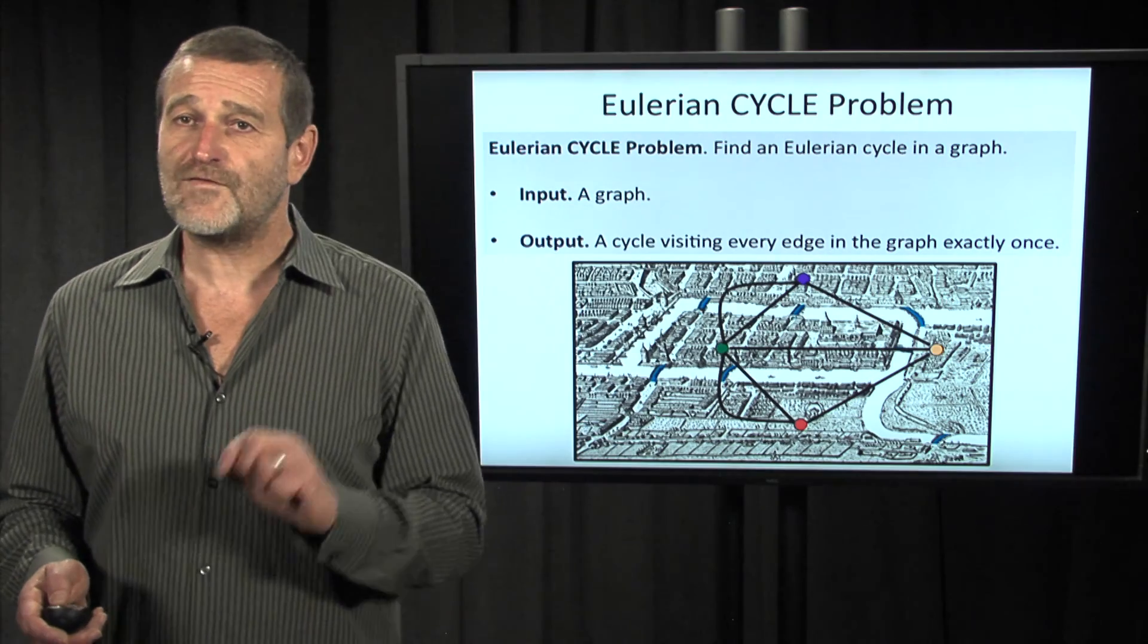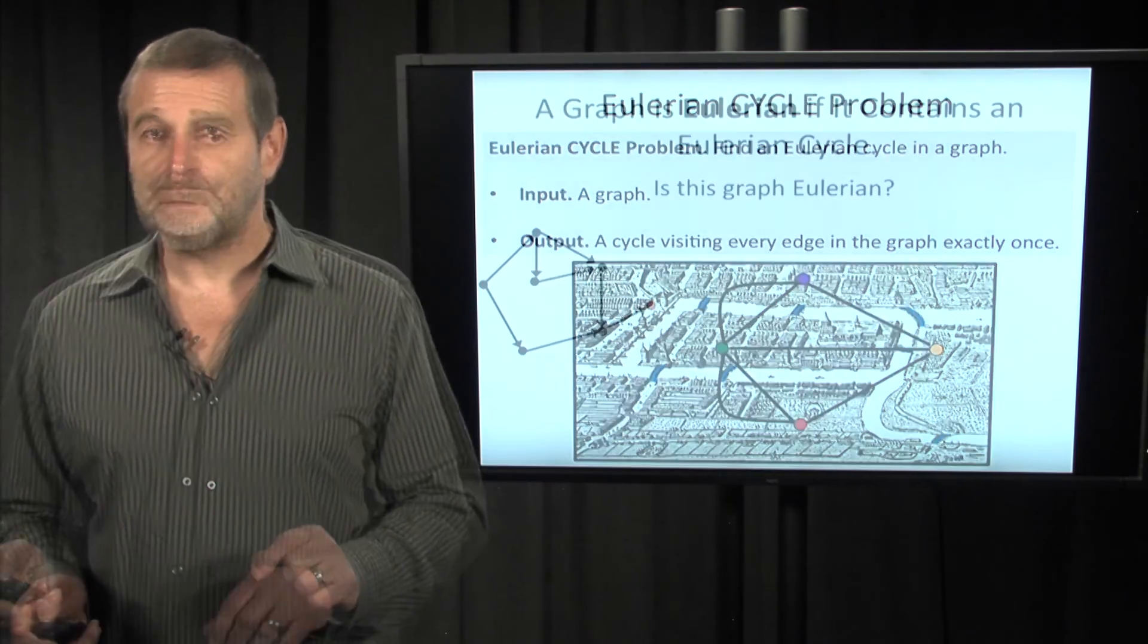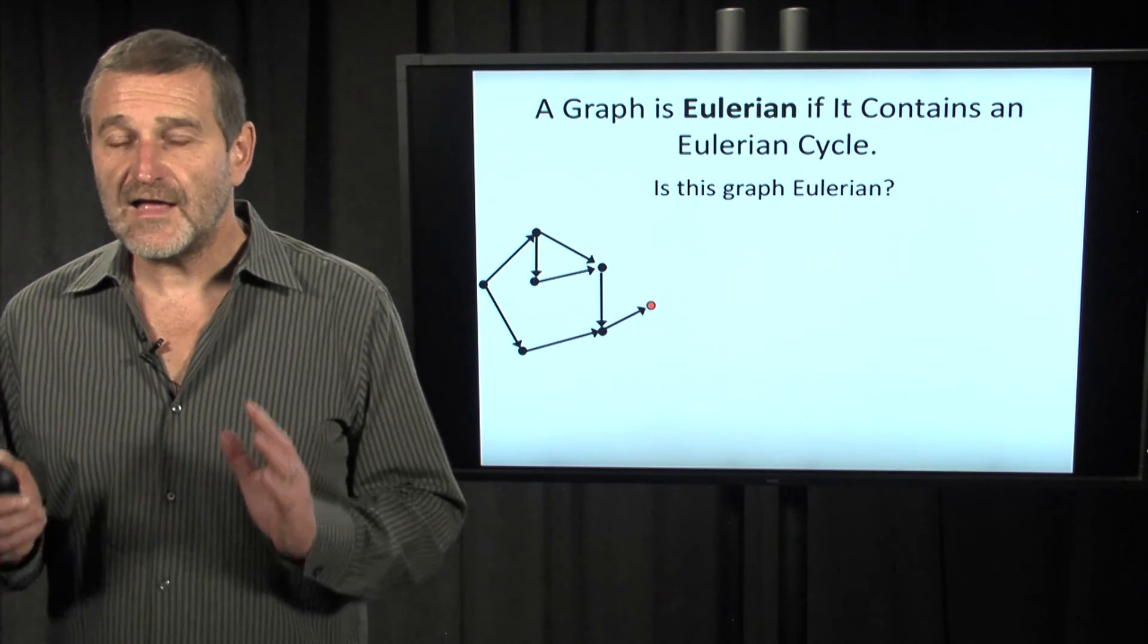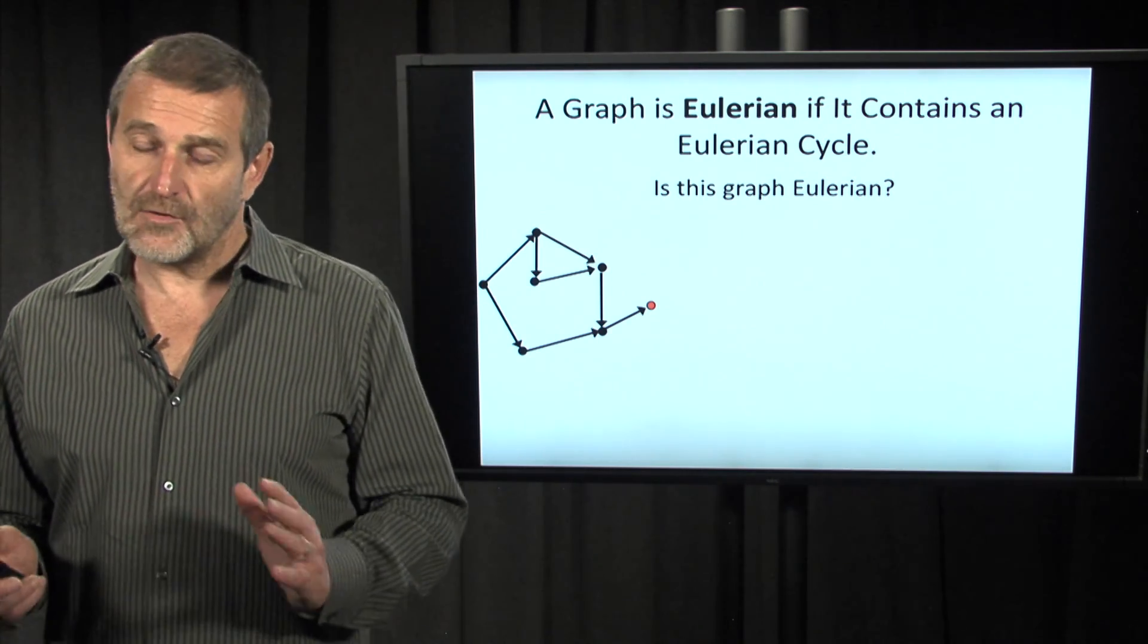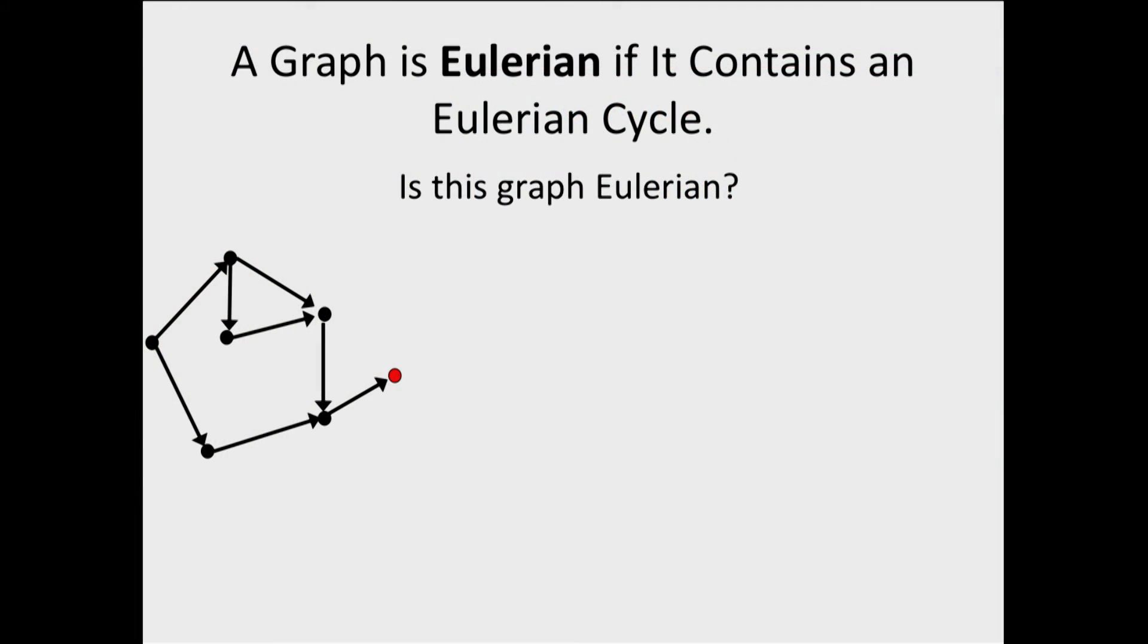There are very small differences between finding Eulerian cycles and Eulerian paths. As soon as we learn how to find cycles, we will learn how to find paths and vice versa. Let me start from a question: Does this graph have an Eulerian cycle? Or in other words, is this graph Eulerian? Of course not, because there is no way out of the red node. What about this graph? It's also non-Eulerian because there is no way in to the red node.